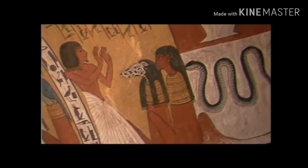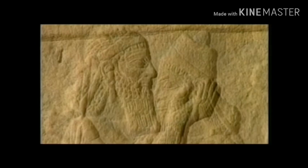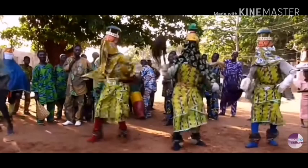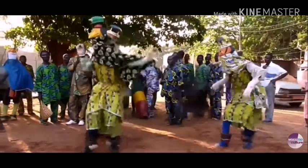Tangible folk art includes objects which historically are crafted and used within the traditional community. Intangible folk art includes such forms as music, dance, and narrative structures.